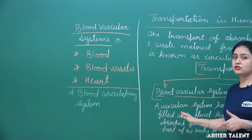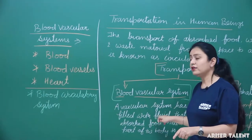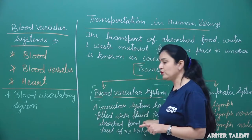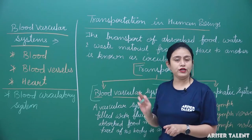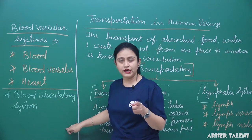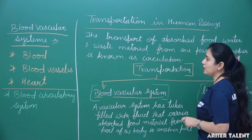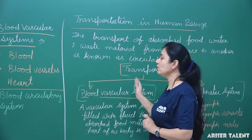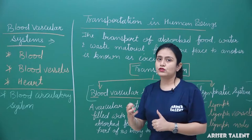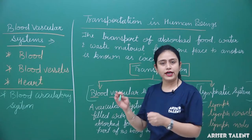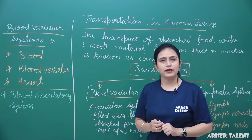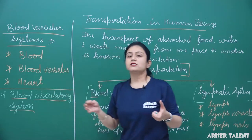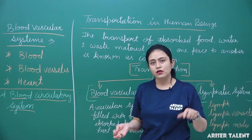The blood vascular system is also known as the blood circulatory system because blood — the fluid — circulates in the complete body and carries absorbed food material from one part to another. This circulatory system is again of two types: open circulatory system and closed circulatory system.